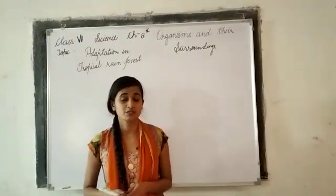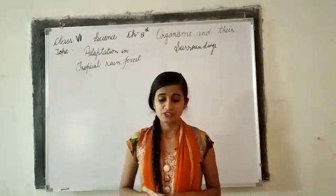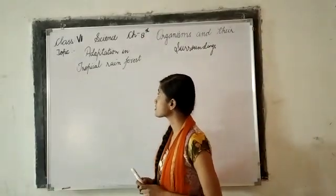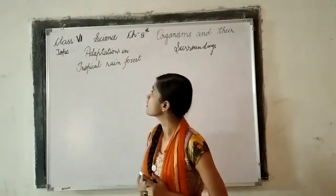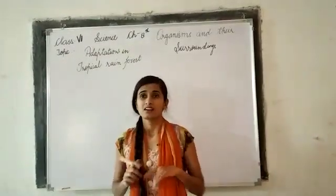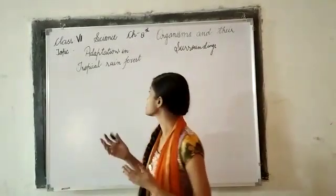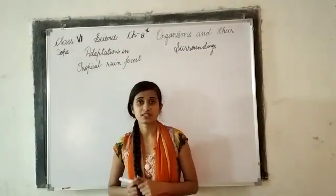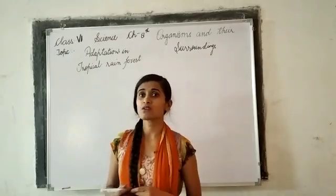Good morning everyone, my name is Komal Yadav. Today we are going to discuss Chapter 8 of Class 6. We are discussing the topic of adaptations in tropical rainforest. This topic relates to the equator — the area near the equator where tropical rainforests are found, and what kind of adaptations organisms have there.